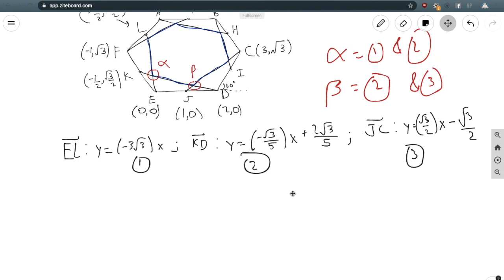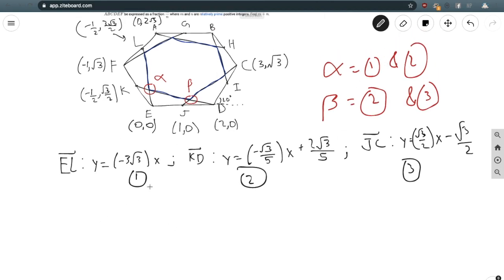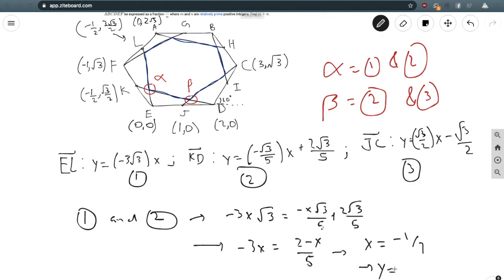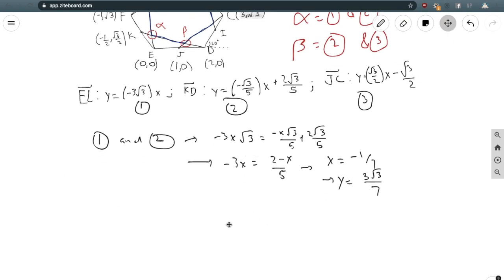Let's first find alpha—the intersection of lines 1 and 2. By substitution, I can set up the equation -3√3x = (-√3/5)x + 2√3/5, and by solving this simple system, I get x = -1/7. Plugging this back into equation 1, I have that the y-coordinate is 3√3/7.